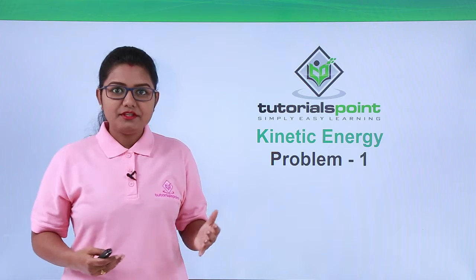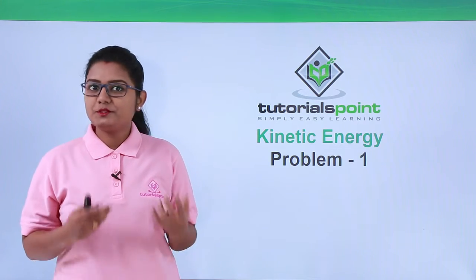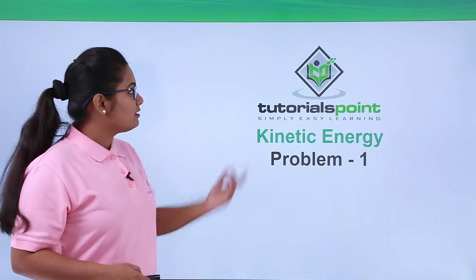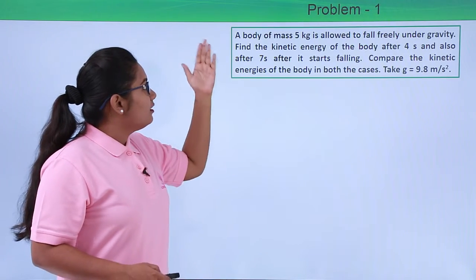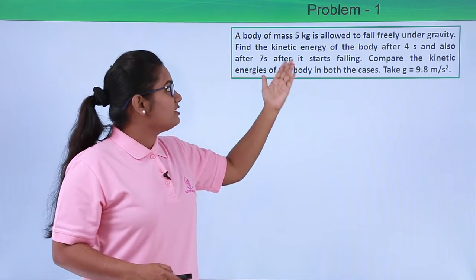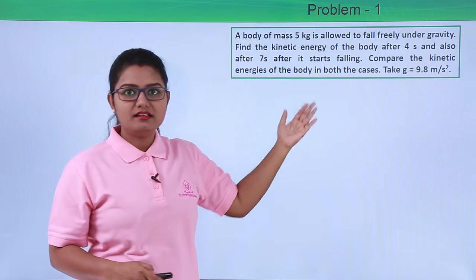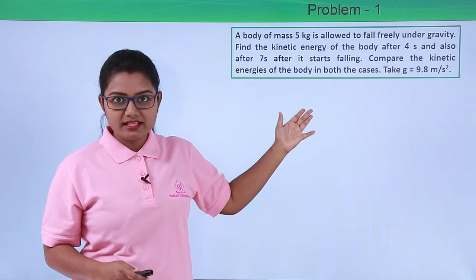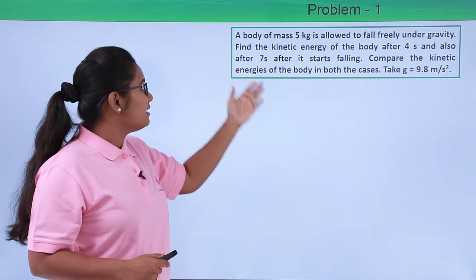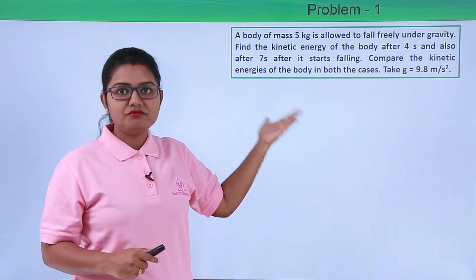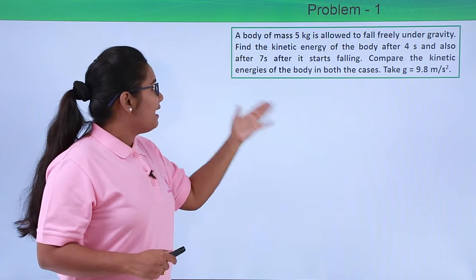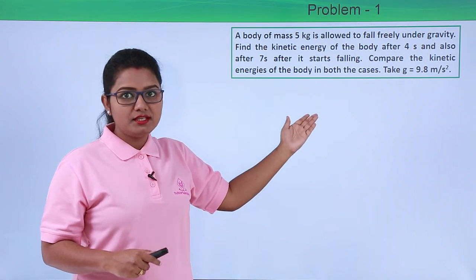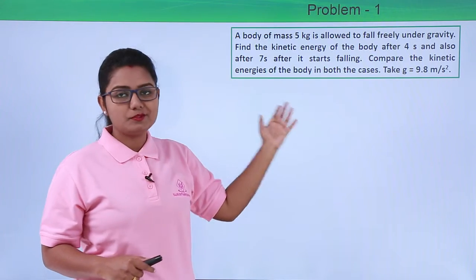Hello everyone. In this video we are going to solve a problem based on the concept of kinetic energy. A body of mass 5 kg is allowed to fall freely under gravity. Find the kinetic energy of the body after 4 seconds and also after 7 seconds after it starts falling. Compare the kinetic energies in both cases, taking g equals 9.8 meters per second squared.